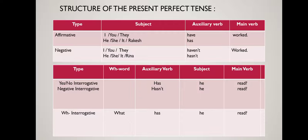In an affirmative sentence, if the subject is 'I,' 'you,' or 'they,' then the auxiliary verb will be 'have' and the main verb in its third form, e.g., 'worked.' If the subject is 'he,' 'she,' 'it,' or 'Rakesh,' then we use 'has' as the auxiliary verb with the main verb in its third form. In a negative sentence, if the subject is 'he,' 'she,' 'it,' or 'Rakesh,' then the auxiliary verb is 'hasn't' followed by the main verb.